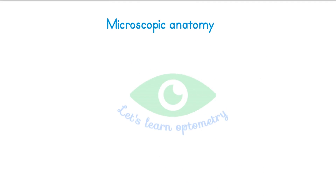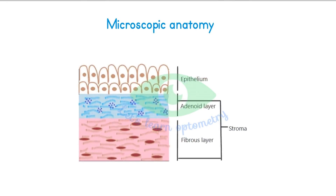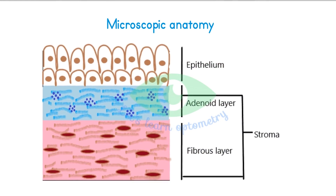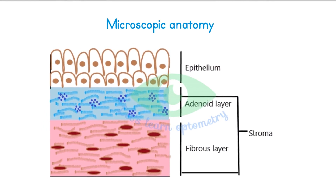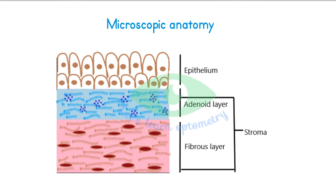Regarding microscopic anatomy, histologically the conjunctiva consists of three layers: the epithelium, the adenoid layer, and the fibrous layer. The adenoid and the fibrous layers are together called the stroma or substantia propria.